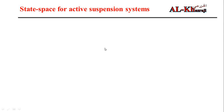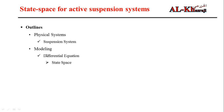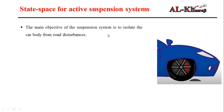In this video, we will see how to formulate the state space model of an active suspension system. The outline is: we have a physical system which is the suspension system, we will derive the differential equations of the system, then we will build the state space model, and finally we will simulate the system in MATLAB without any controller. The main objective of the suspension system is to isolate the car body from road disturbance.